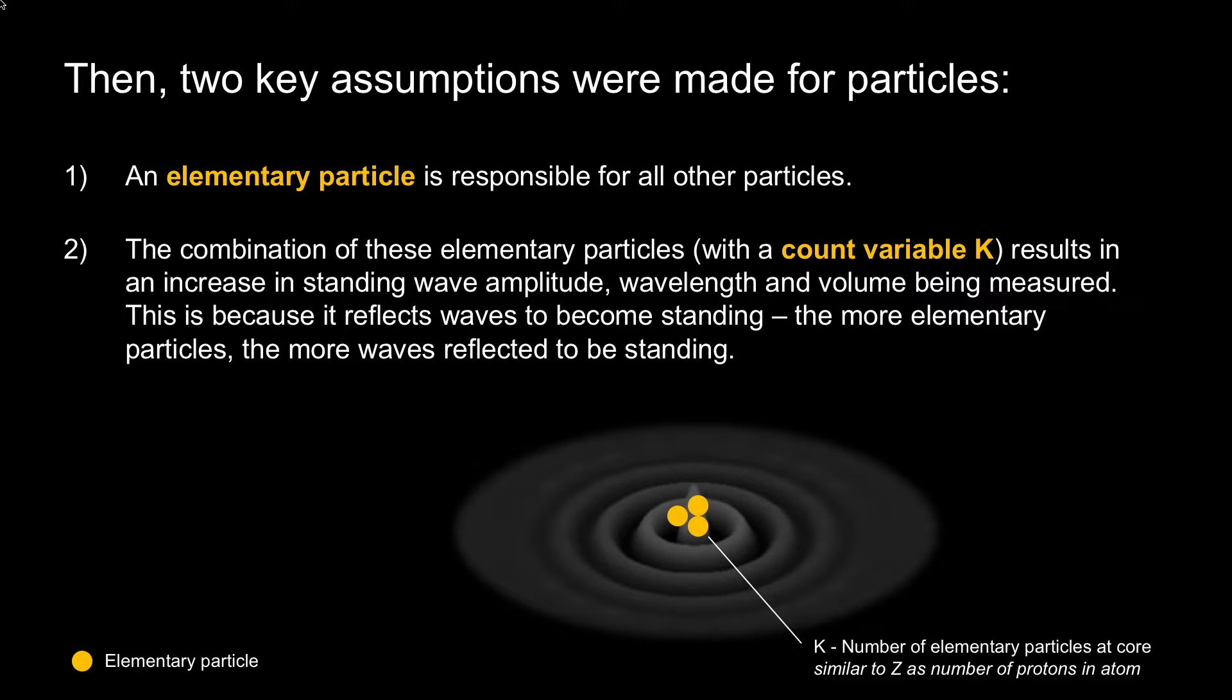Assuming a combination of these particles, a letter was given to it, much like how the proton count in atoms was given the letter Z. A variable called K was given. If these elementary particles combine at a core, there's an increase in standing wave amplitude, wavelength, and the volume being measured.